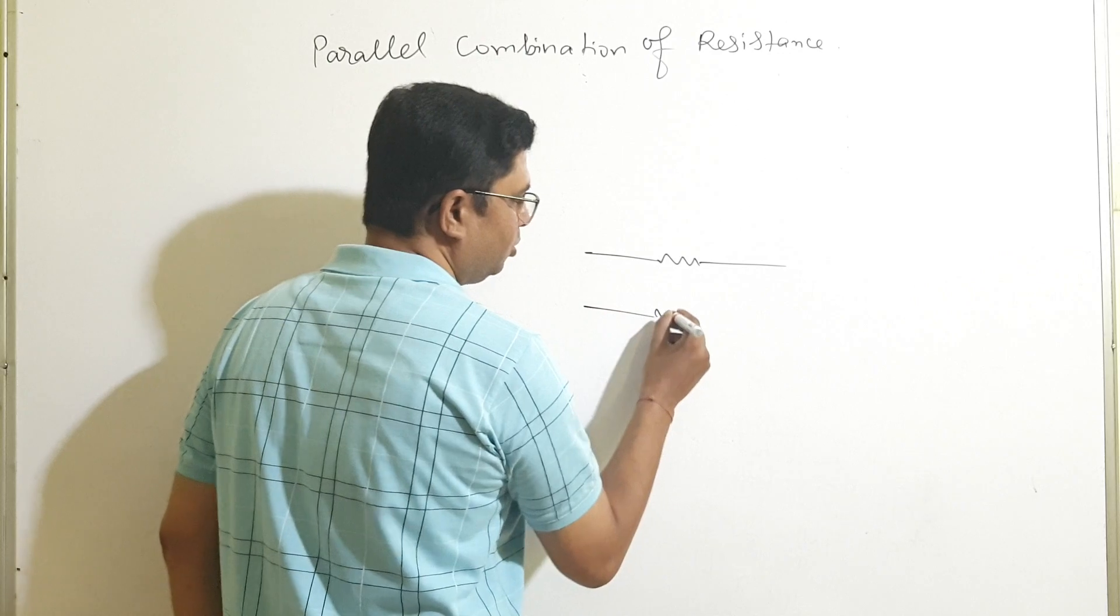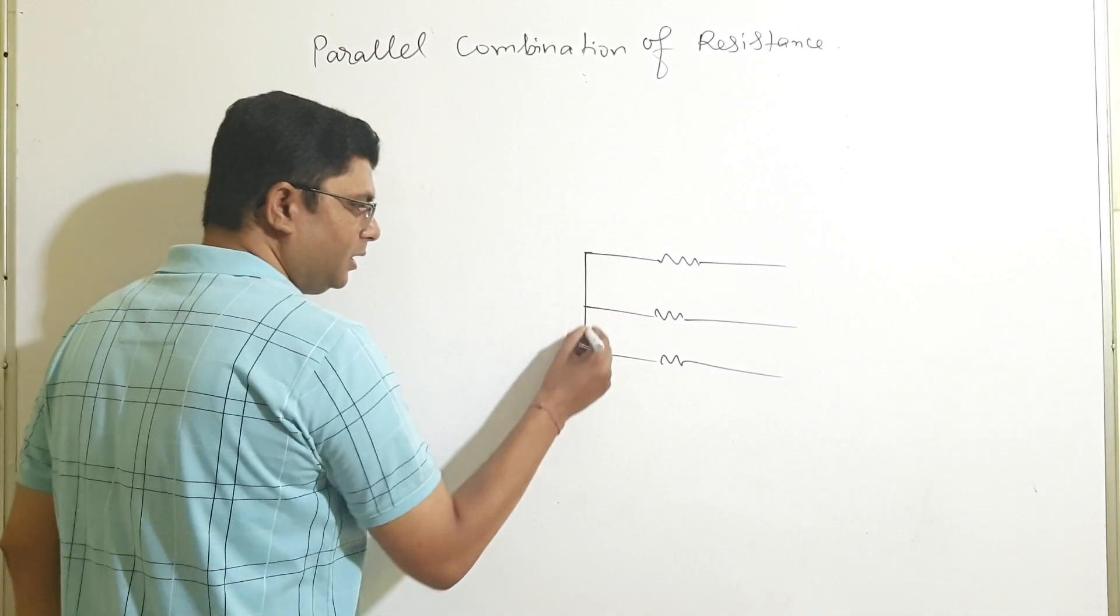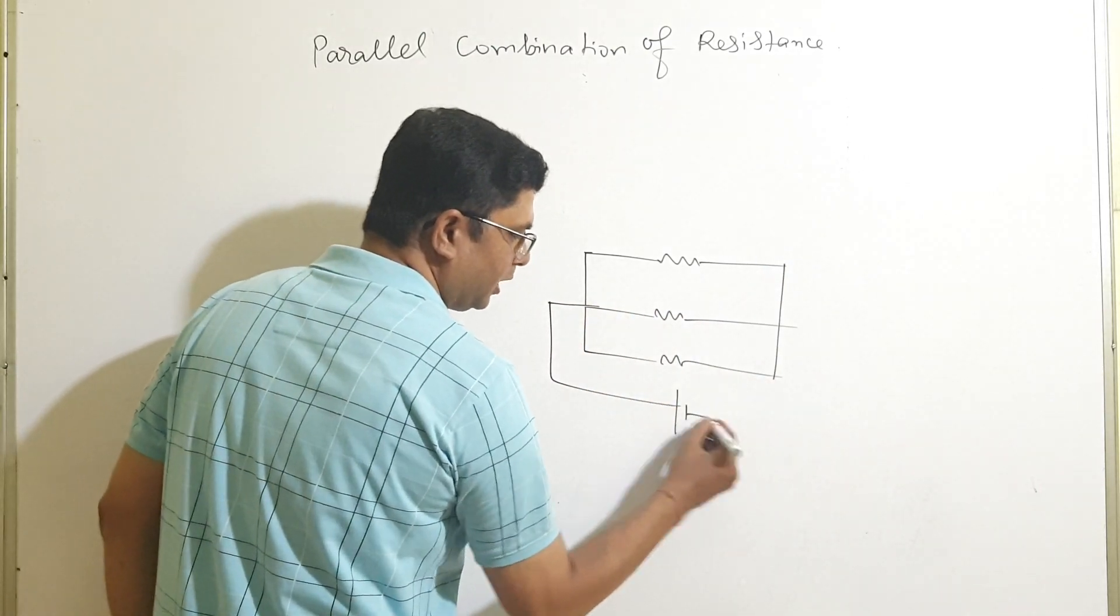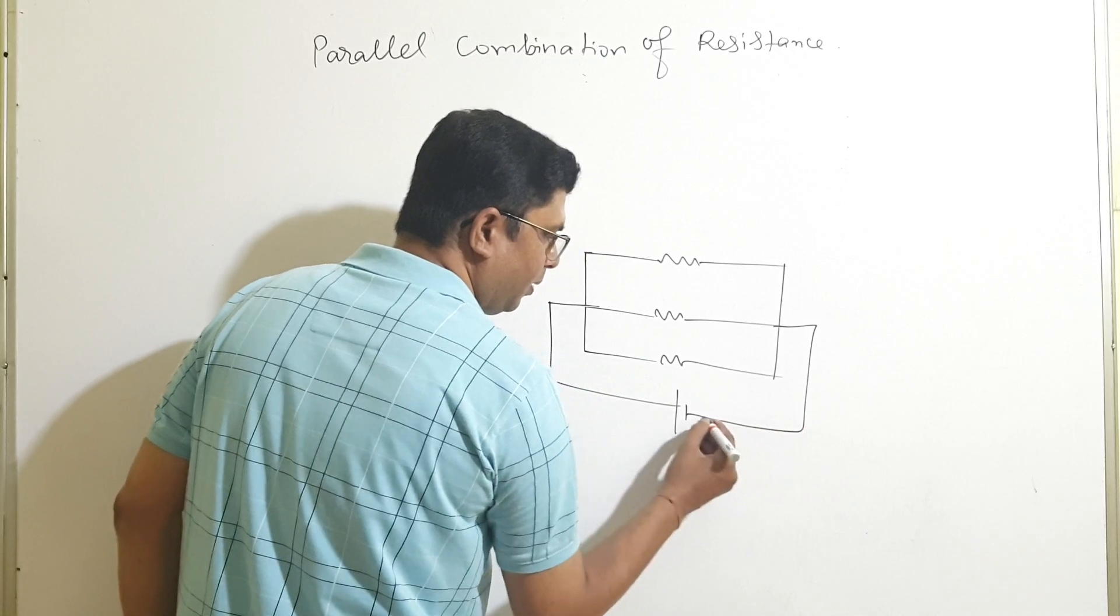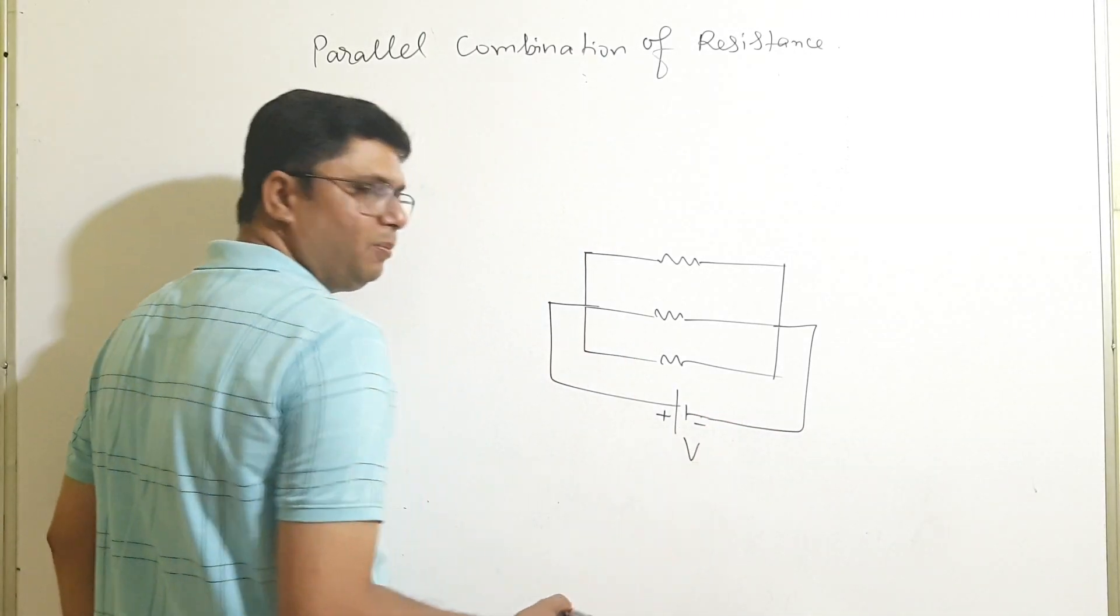This is 1, this is 2, and this is 3 resistances. Connect these 3 resistances parallely across a potential. This is the applied potential. Then V is the applied potential.